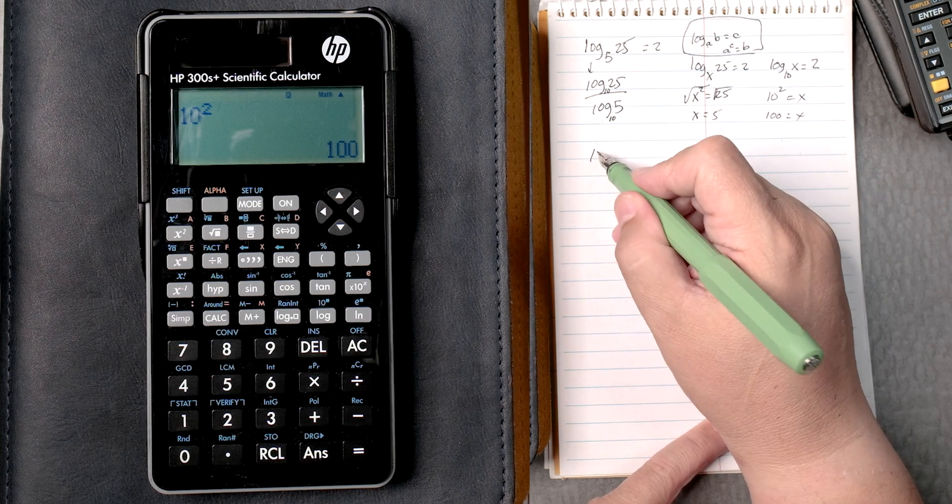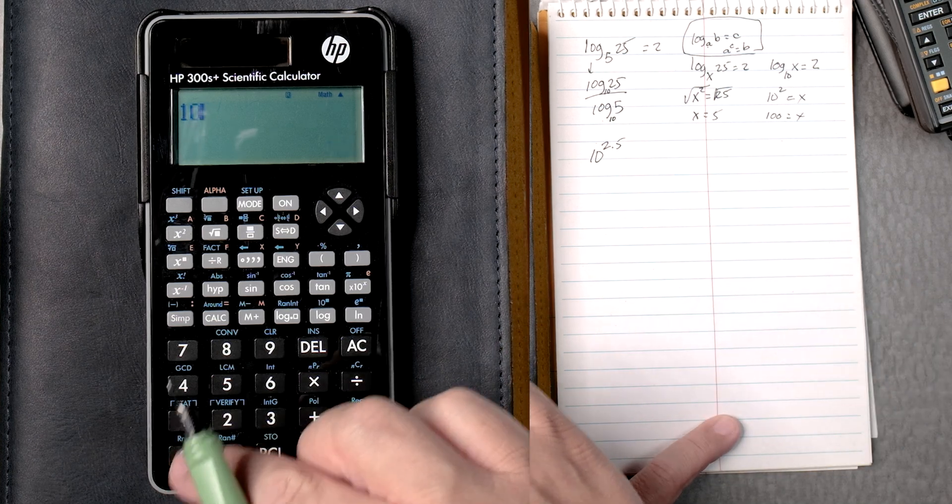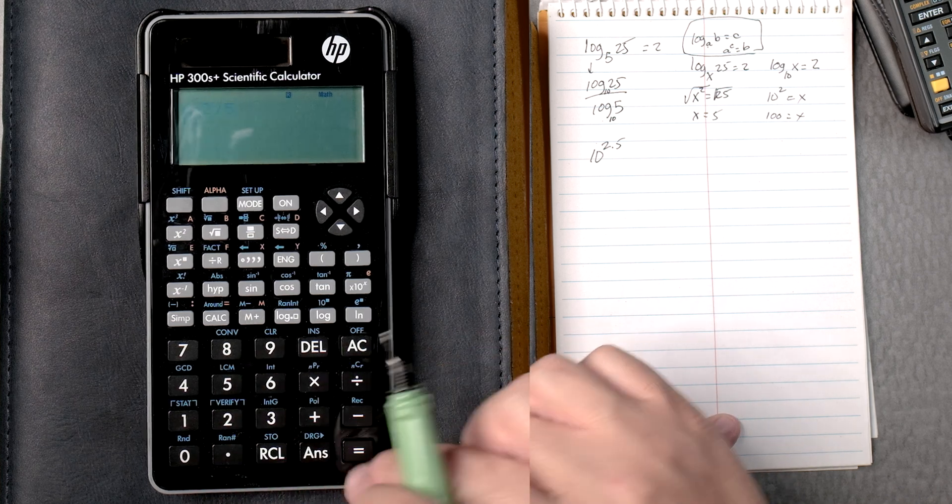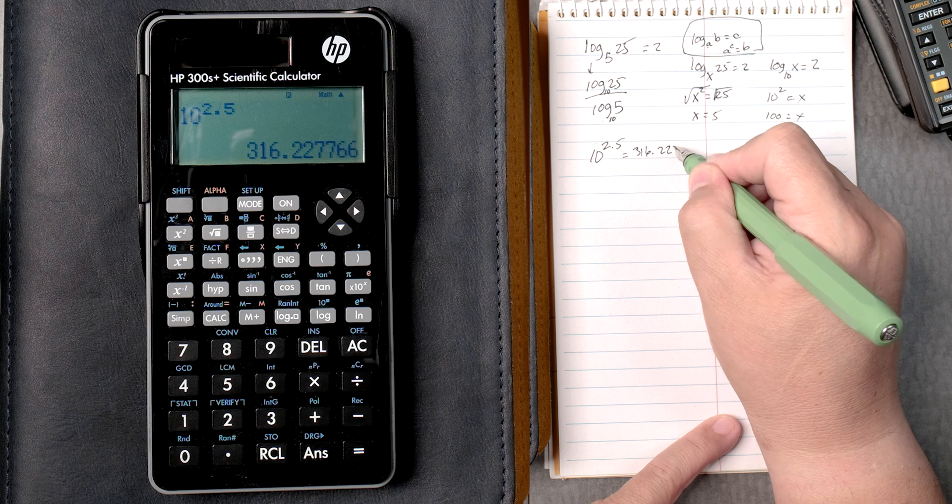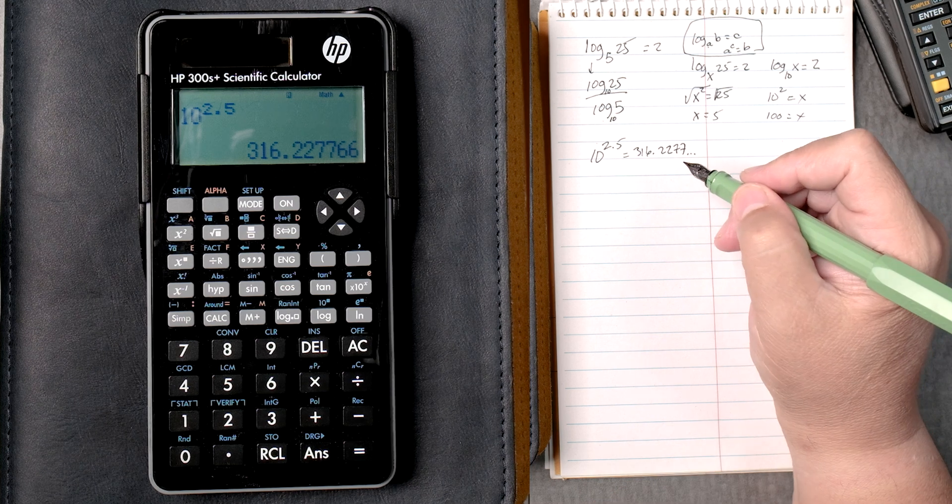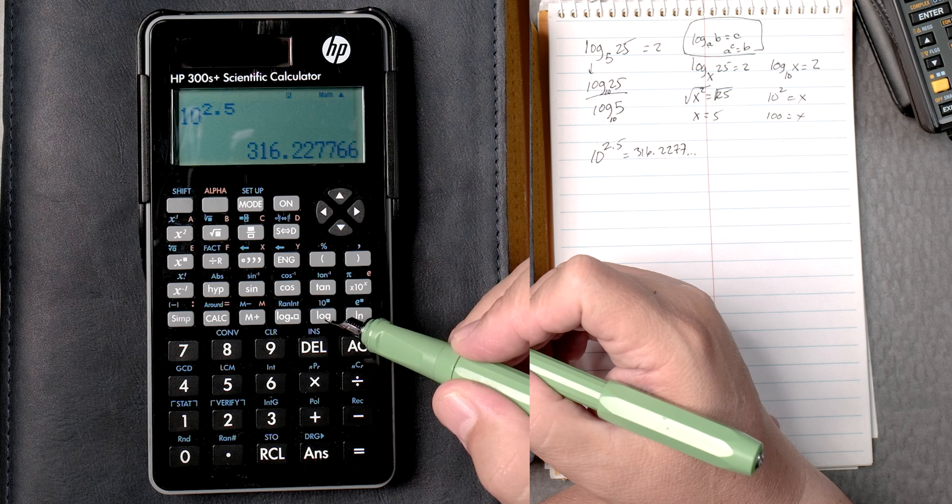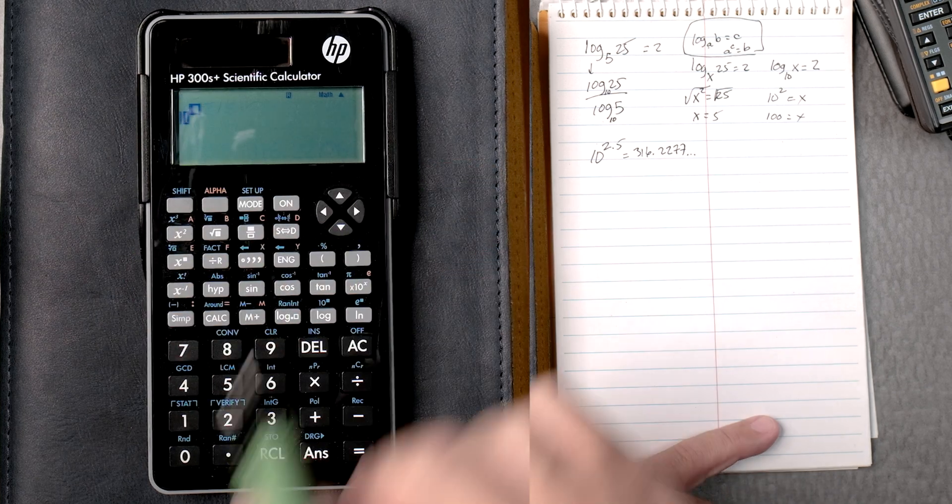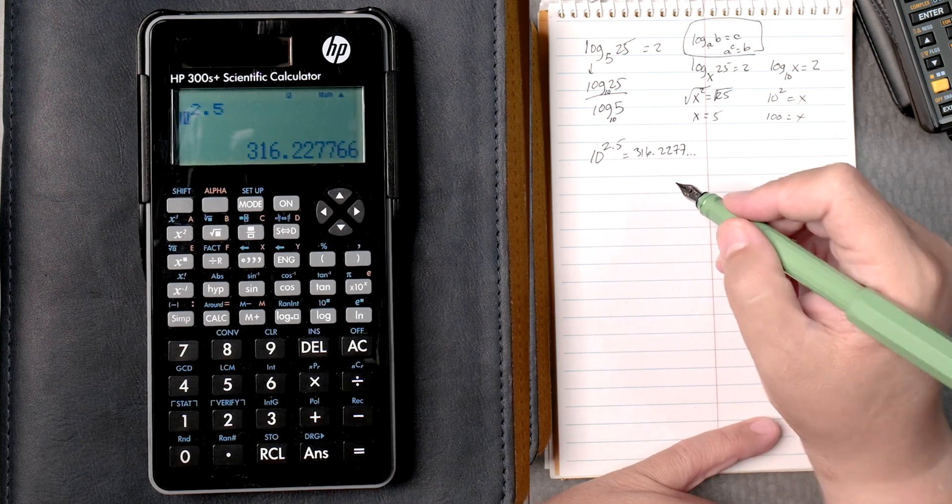Let's do some antilogs, 10 to the 2.5. So if we put 10, x to the blank, 2.5 equals, that gives you an answer of 316.2277 and so forth. There's another way of doing this. If you look at the log key, there's a 10 to the blank already. So shift, 10 to the blank, 2.5 equals, gives you the same answer.